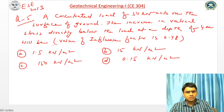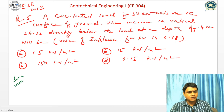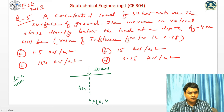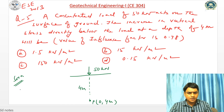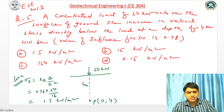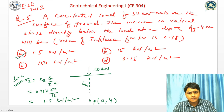The next problem asks for vertical stress directly below the load. The value of the Boussinesq influence factor KB is given as 0.48; if not given, it would be 3/(2π). The load is 50 kN and we have to find the vertical stress at a depth of 4 meters. So the coordinate is (0, 4). The vertical stress σz = KB × Q/Z² = 0.48 × 50 / (4²) = 0.48 × 50 / 16 = 1.5 kN/m².